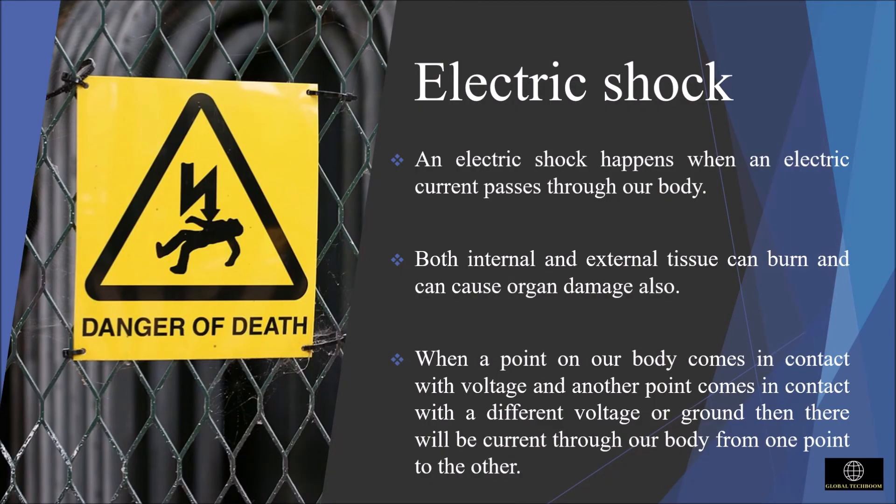What is electric shock? An electric shock happens when an electric current passes through our body. Both internal and external tissue can burn and cause organ damage also. When a point on our body comes in contact with voltage and another point comes in contact with a different voltage or ground, then there will be a current through our body from one point to another. The severity of the electric shock depends on the amount of the voltage and the path that the current takes through our body.